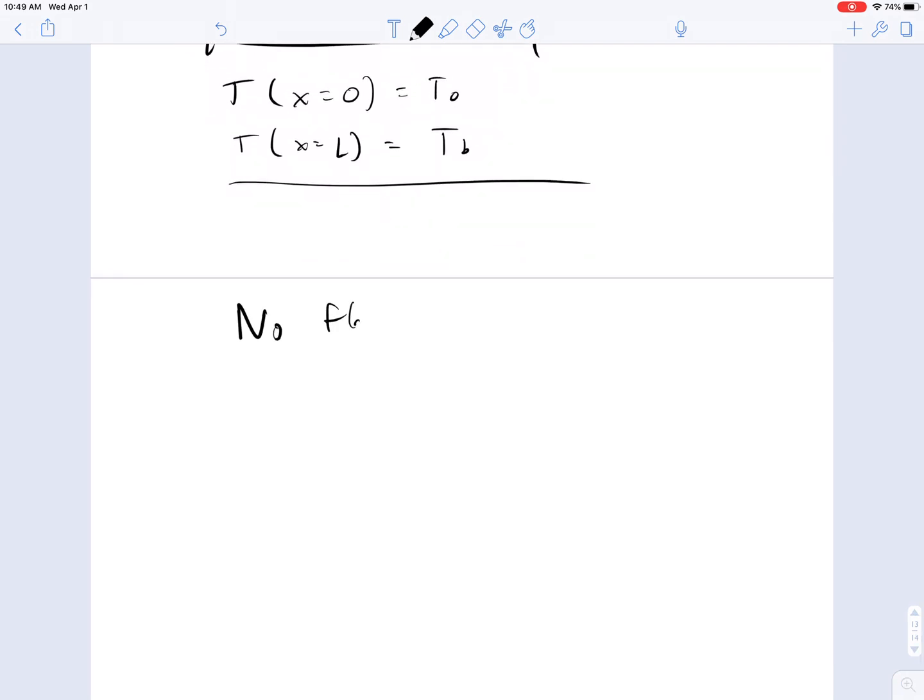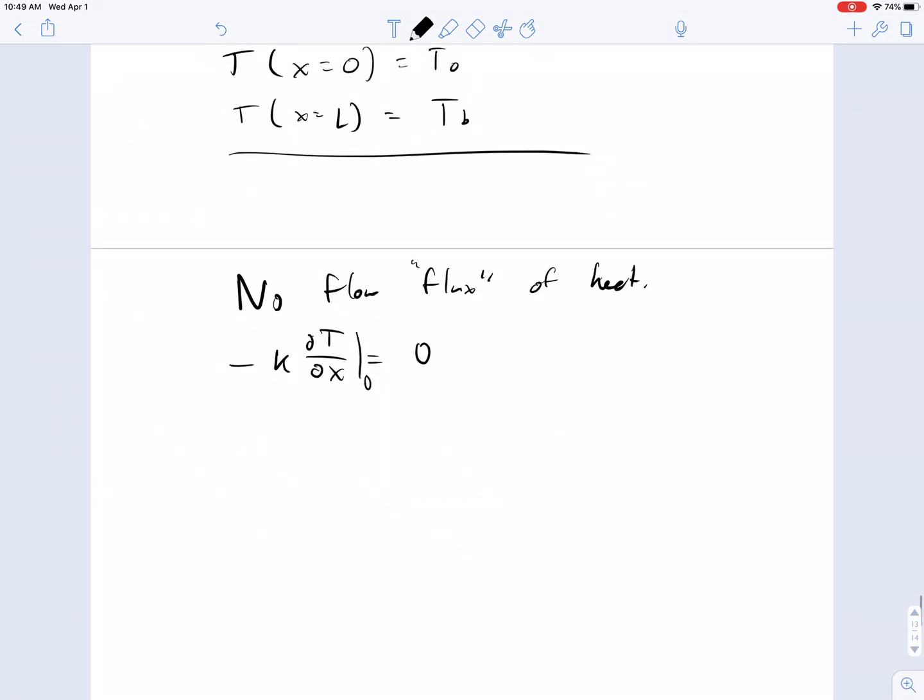You can have no flow or no flux of heat. What does this mean? If you remember from Fourier's law for heat transfer, we have minus k dT/dx at a position equal to something. But if we set it equal to zero, that means there is no heat flow. This could be, for instance, in a well-insulated region or vessel.